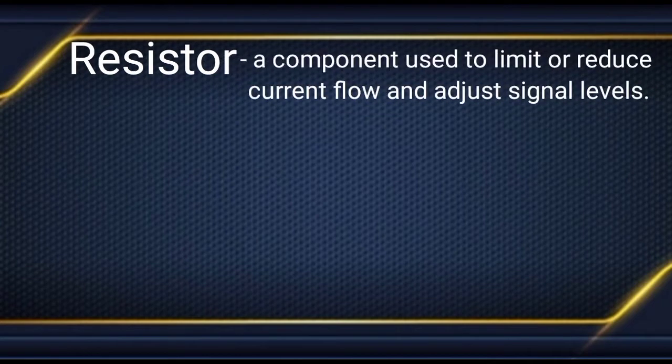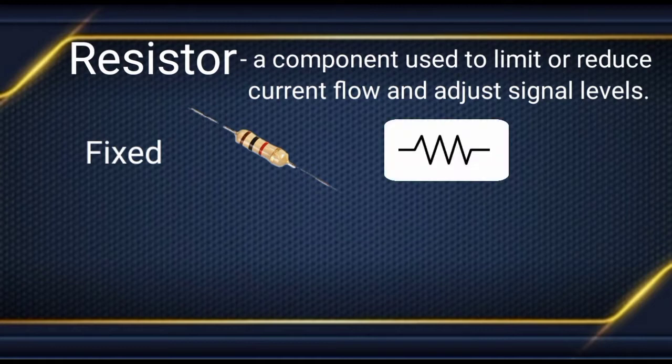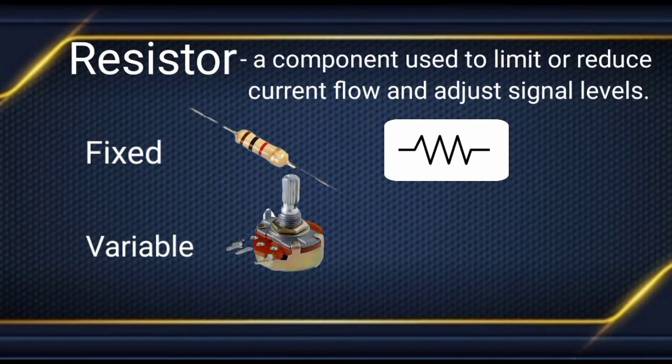Here are the basic electronic schematic symbols. First, we have the resistor. It is a component used to limit or reduce current flow and adjust signal levels. It has two types. First is the fixed resistor — this is the actual appearance and the symbol. Second is the variable resistor, and this is the actual appearance. Sometimes we call this the volume control, and this is the symbol.